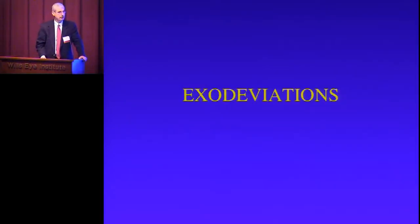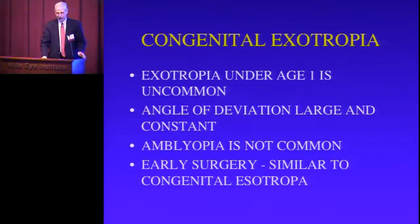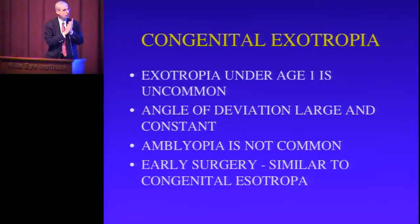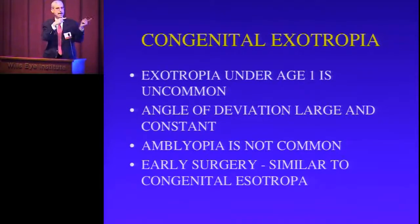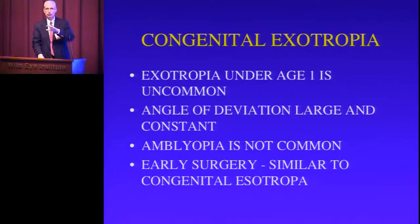The second common type of deviation is exodeviations. Whereas congenital esotropia is relatively common in the whole esodeviation group, congenital exotropia is not as common — it's characterized by a large and constant exodeviation. Many of these children alternate, so they don't have amblyopia, and we operate on them early for the same reason as congenital esotropia. Here's a child with a very large and constant exodeviation — fixating with the right eye, then alternating to the left eye, confirming no amblyopia, but those eyes need to be straightened.